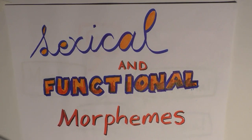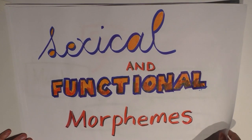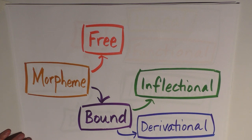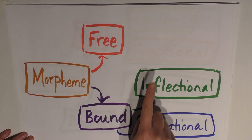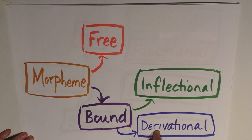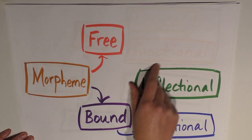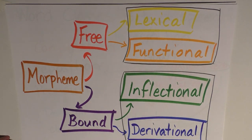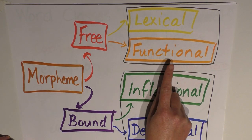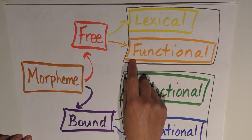Hi there, this is Anna and this is episode 3. In this episode we're going to look at the division of free morphemes into lexical morphemes and functional morphemes. In the last video we created a table for our morphemes showing that morphemes can be divided into free morphemes and bound morphemes, and bound morphemes can be further divided into inflectional and derivational morphemes. Now we're going to add that free morphemes can be further divided into lexical morphemes and functional morphemes, and this is the area we're working in today.